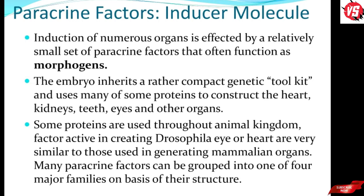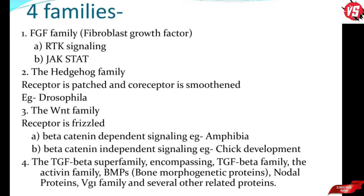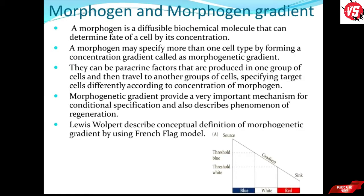Many paracrine factors can be grouped into one of four major families on the basis of their structures, which are conserved across the animal kingdom. These four major families include: the FGF family (Fibroblast Growth Factor), the Hedgehog family, the Wnt family, and the TGF-beta superfamily which includes nodal proteins and several other related proteins.